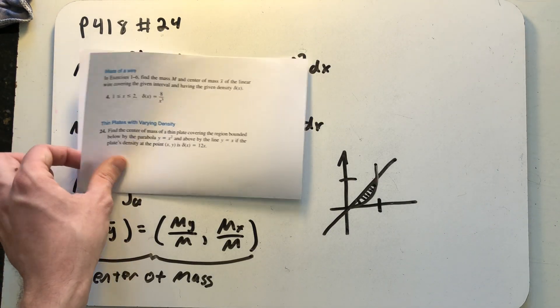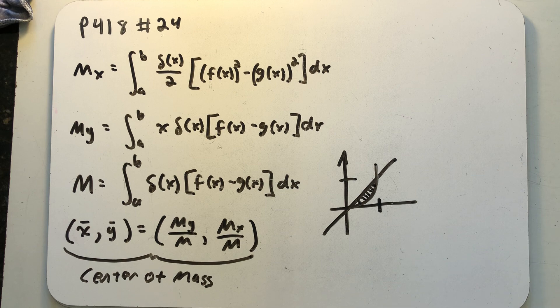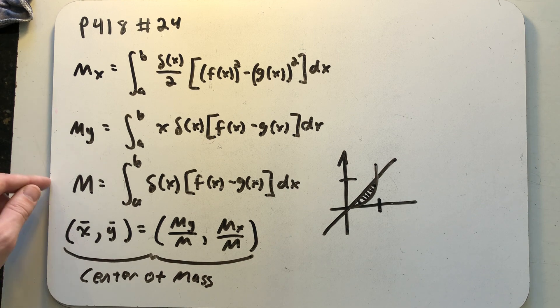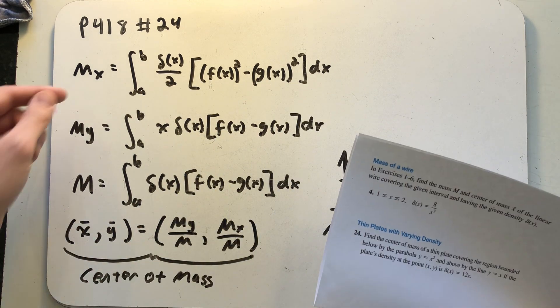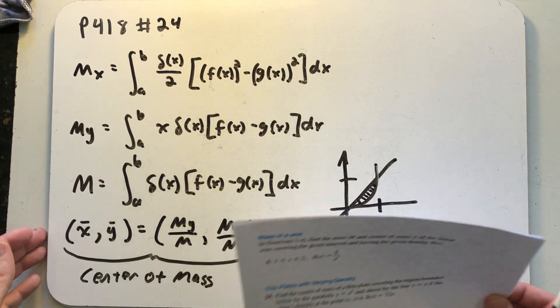To find the center of mass of this region I'll be using these three formulas. The moment about the x-axis which is going to help me find the y coordinate, the moment about the y-axis which is going to help me find the x coordinate, and then finally the total mass of the plate. So we have three integrals to set up and find all relating to this situation. Let's get started and calculate Mx.